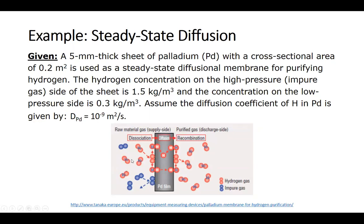The left-hand side in this case would be the high pressure side, the impure side, and then the right-hand side would be the low pressure side and the pure side. For this problem, we're going to assume that the high pressure side has a concentration of 1.5 kilograms per cubic meter and on the low pressure side, we have a concentration of 0.3 kilograms per cubic meter.